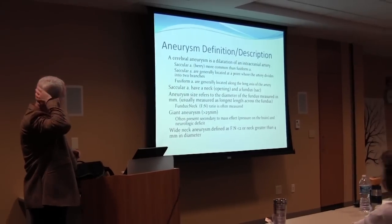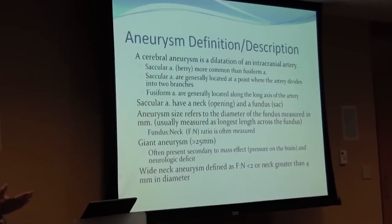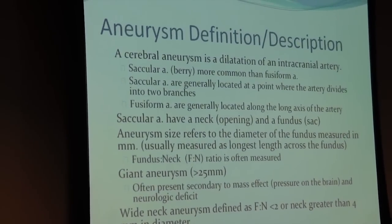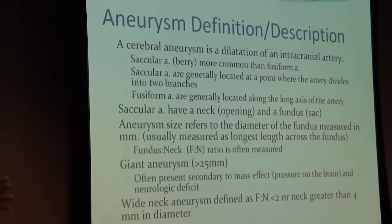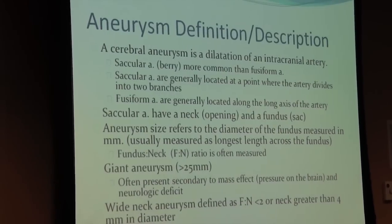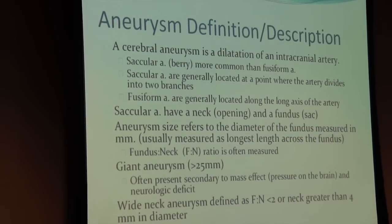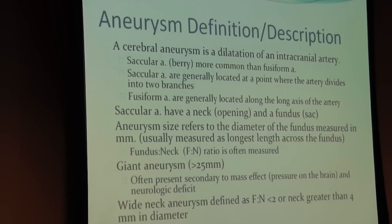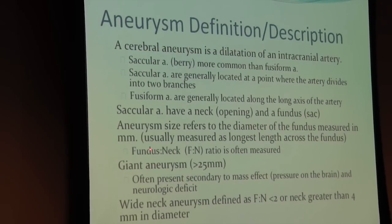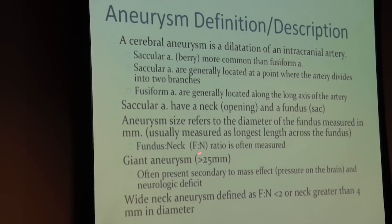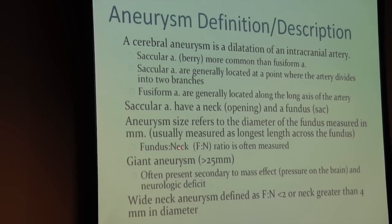What's the definition of an aneurysm? It's a dilatation of an intracranial artery. They can be saccular — more common — where at a branch point or turn point a little sac forms that looks like something you could pluck off. There are also fusiform aneurysms, more like an aortic aneurysm, where the vessel dilates and then normalizes again. For saccular aneurysms, you'll hear us talk about the neck — where the aneurysm arises from the blood vessel — and the fundus, which is the body of the aneurysm. We measure the fundus-to-neck ratio by dividing the size of the sac by the size of the neck.